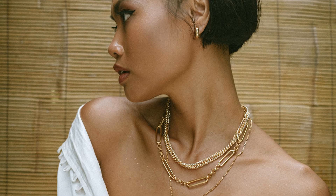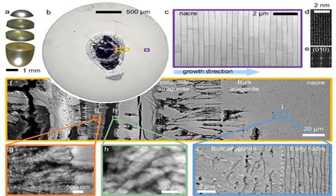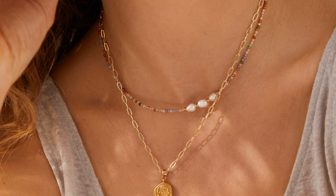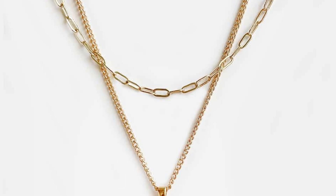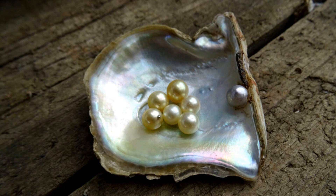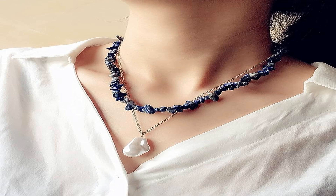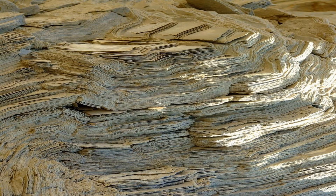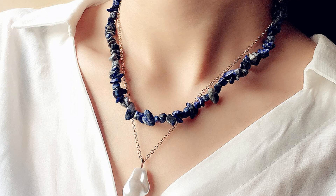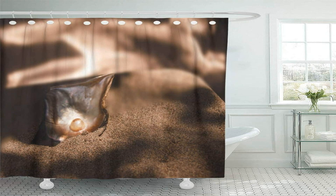With each layer of nacre being secreted, the mollusk carefully constructs a series of concentric coatings around the irritant. The nacre is composed of microscopic calcium carbonate crystals arranged in a highly organized structure, giving it strength and resilience. As the layers of nacre accumulate, they interlock and form a solid structure, gradually transforming the irritant into a pearl. The mollusk's precise control over the deposition and arrangement of these layers plays a crucial role in determining the pearl's size, shape, and quality.